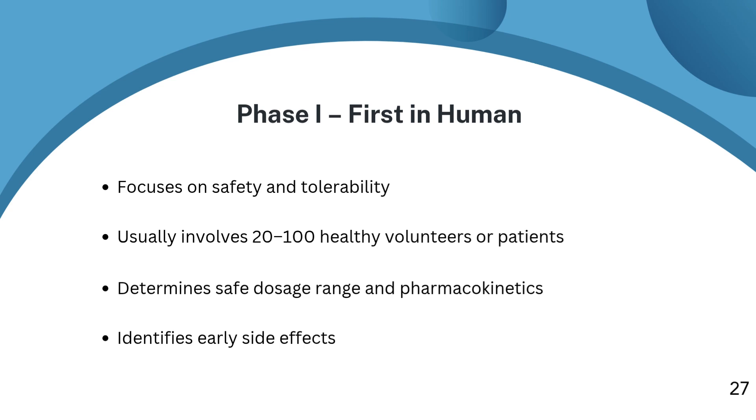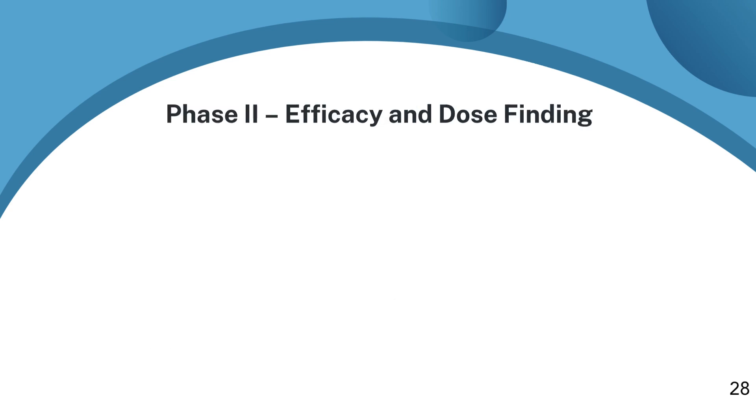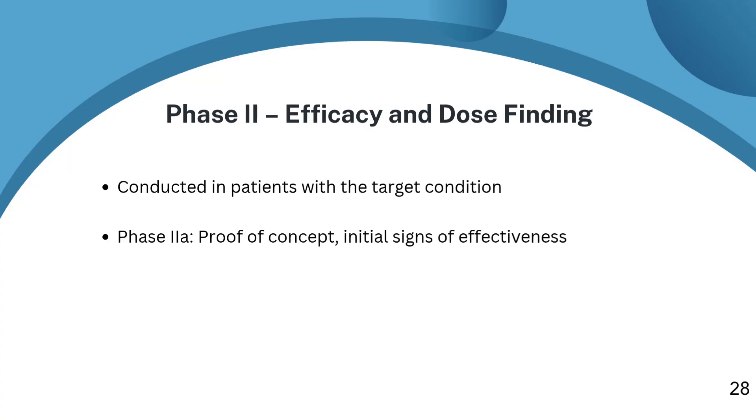Phase two: does it work in patients? If phase one looks good, the drug moves into phase two. And now we're working with patients, real people who have the disease we're trying to treat. Phase two is where things start to get more specific, and it's often split into two parts, phase 2A and phase 2B. In phase 2A, we're looking for what we call proof of concept. We want to know, does the drug show early signs of doing what we hope it will? We're still learning about safety, but we're beginning to focus on whether the drug is having a meaningful effect on the disease.